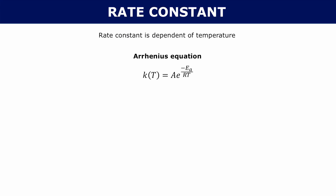The Arrhenius equation tells you that your rate constant k is equal to A times e to the minus Ea over RT. So what do all of these mean?